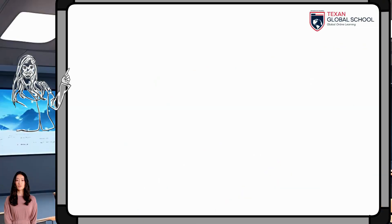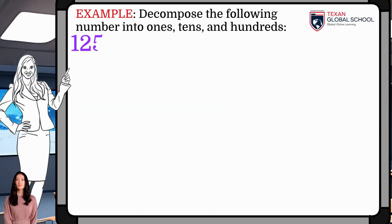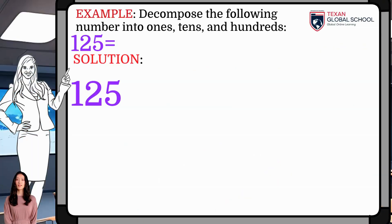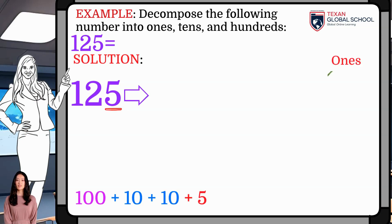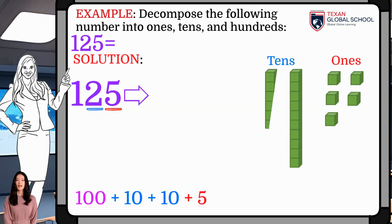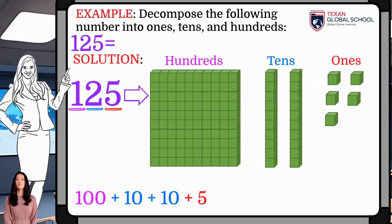If we now decompose 125, it will need to be decomposed into 1s, 10s, and 100s since it has 3 digits. So, 125 has 5 1s, 2 10s, and 100.